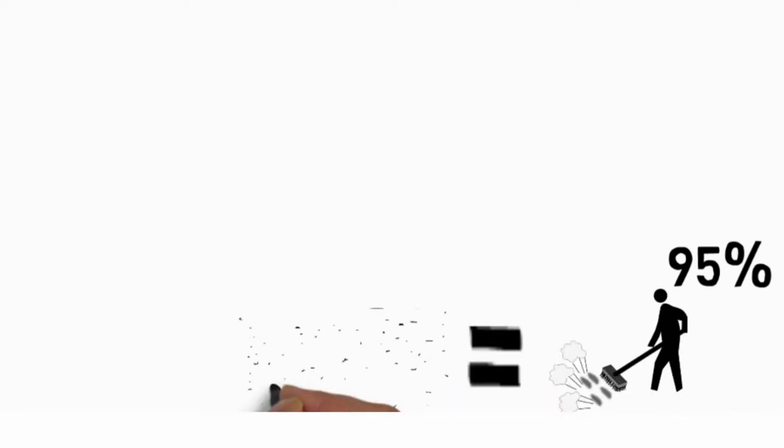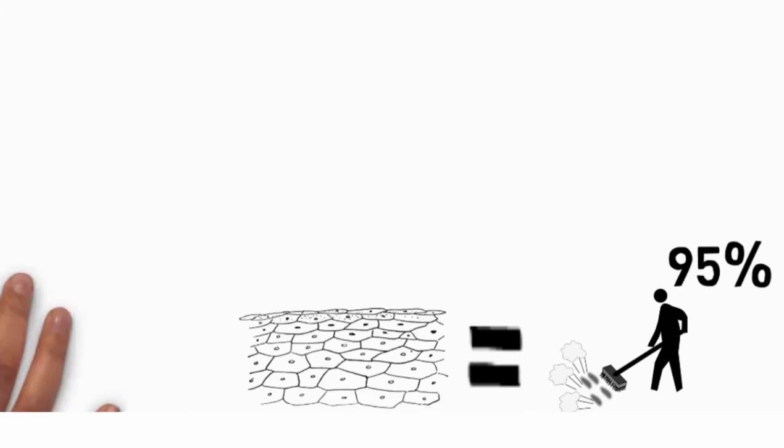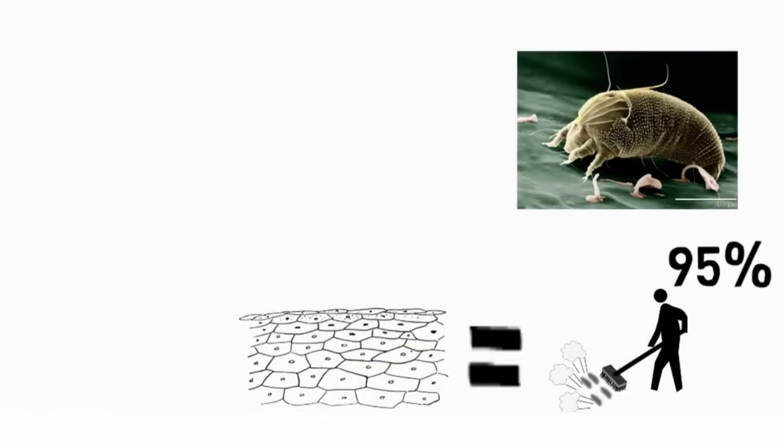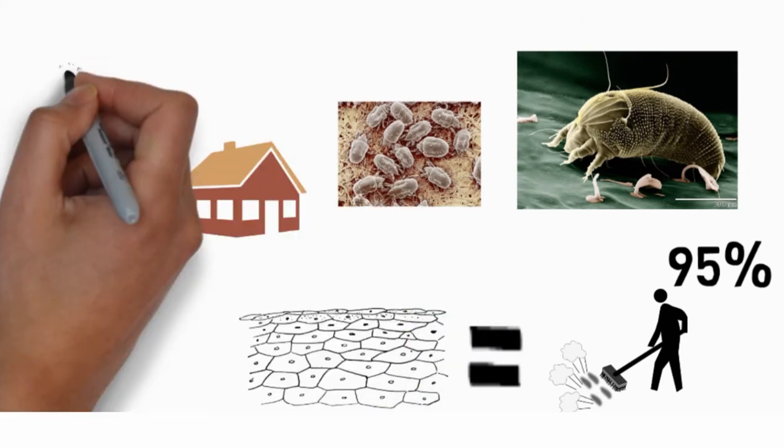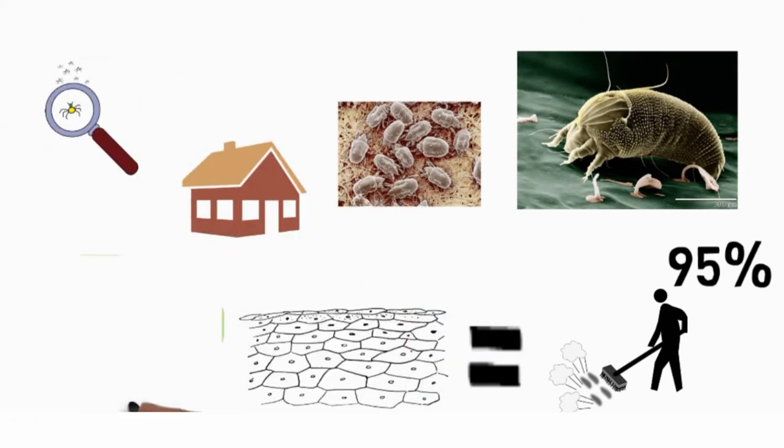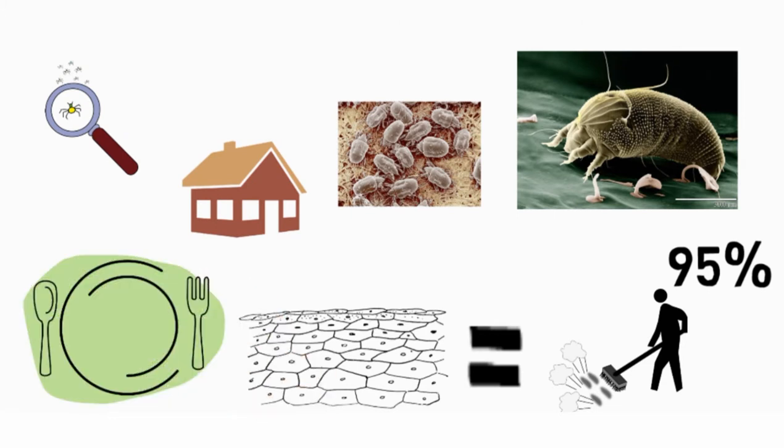About 95% of dust contains skin cells. The main reason for an allergic reaction to dust is dust mites. Dust mites are extremely numerous and are basically found everywhere in the house.